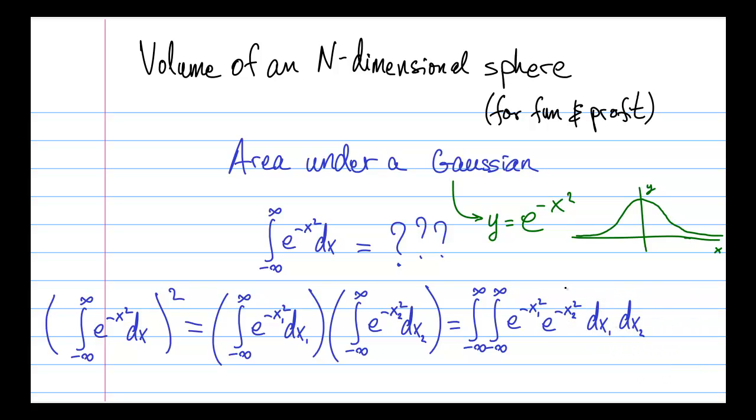And we also write e to the minus x1 squared times e to the minus x2 squared is e to the minus the quantity x1 squared plus x2 squared. Notice that we also renamed x's to x1 and x2 in the two separate integrals to keep from getting confused.